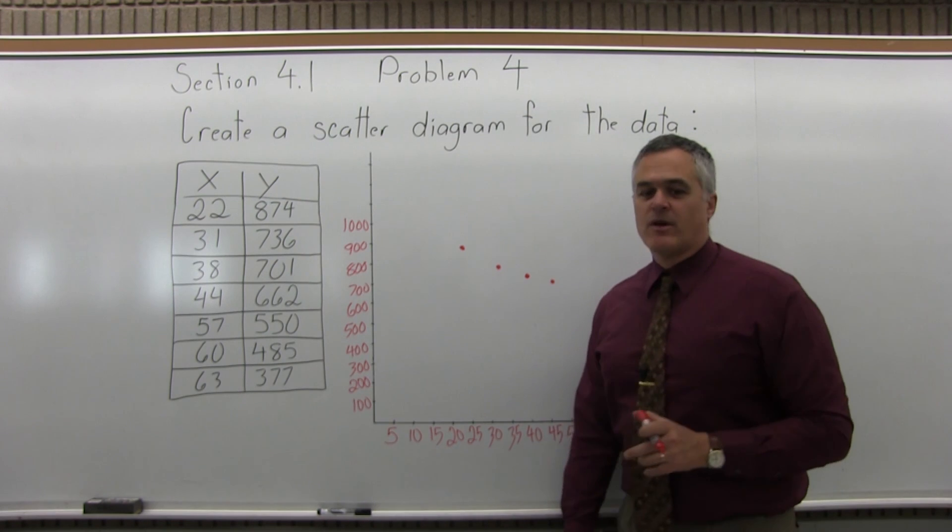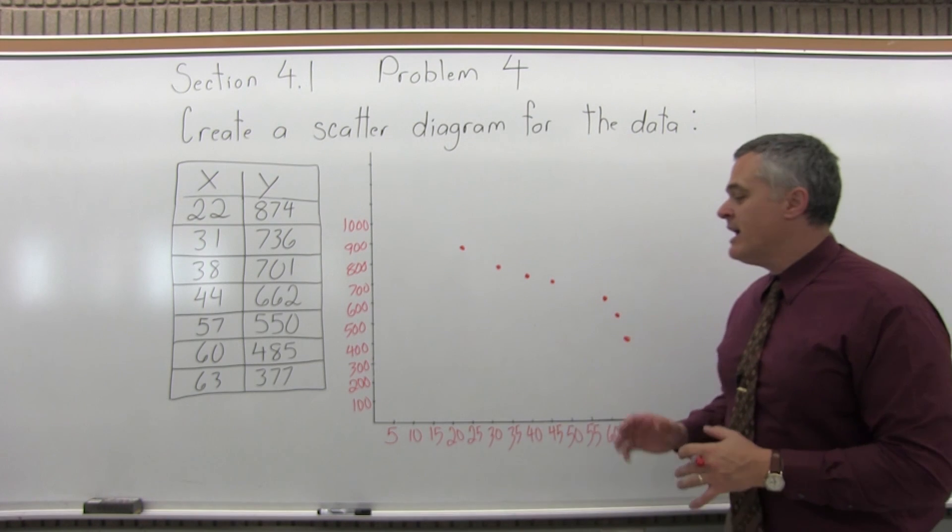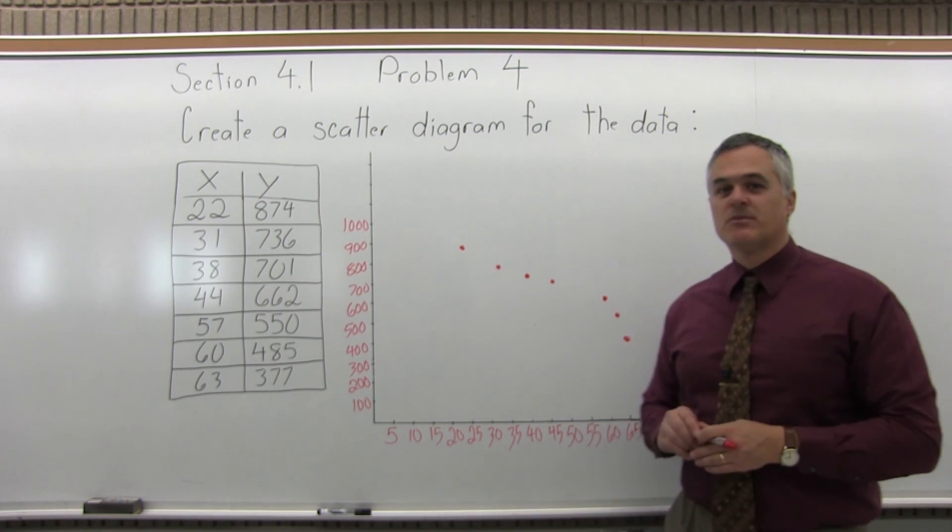And there's a scatter diagram. Now, again, someone else may have run the X scale by tens, and that would be okay. It would change how the graph looks a little bit, but it would still be correct.